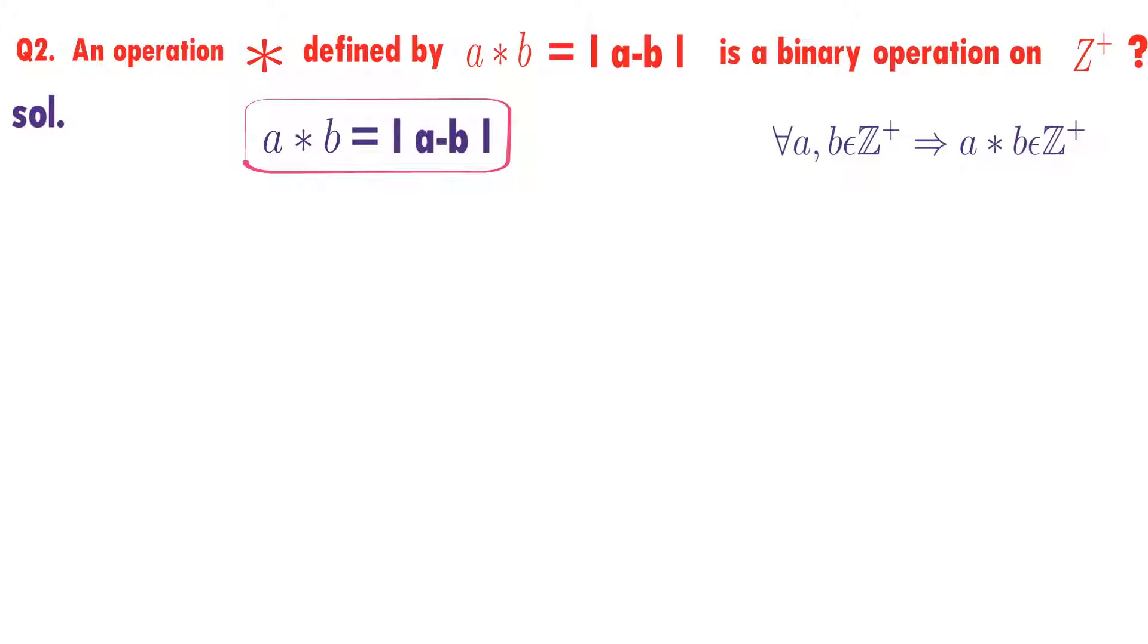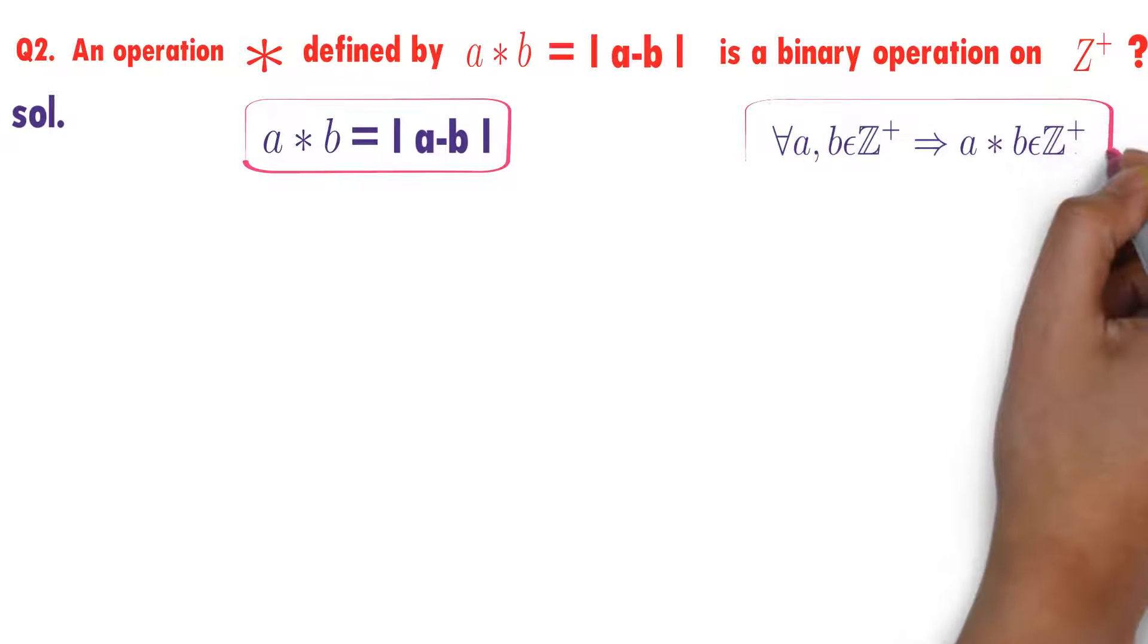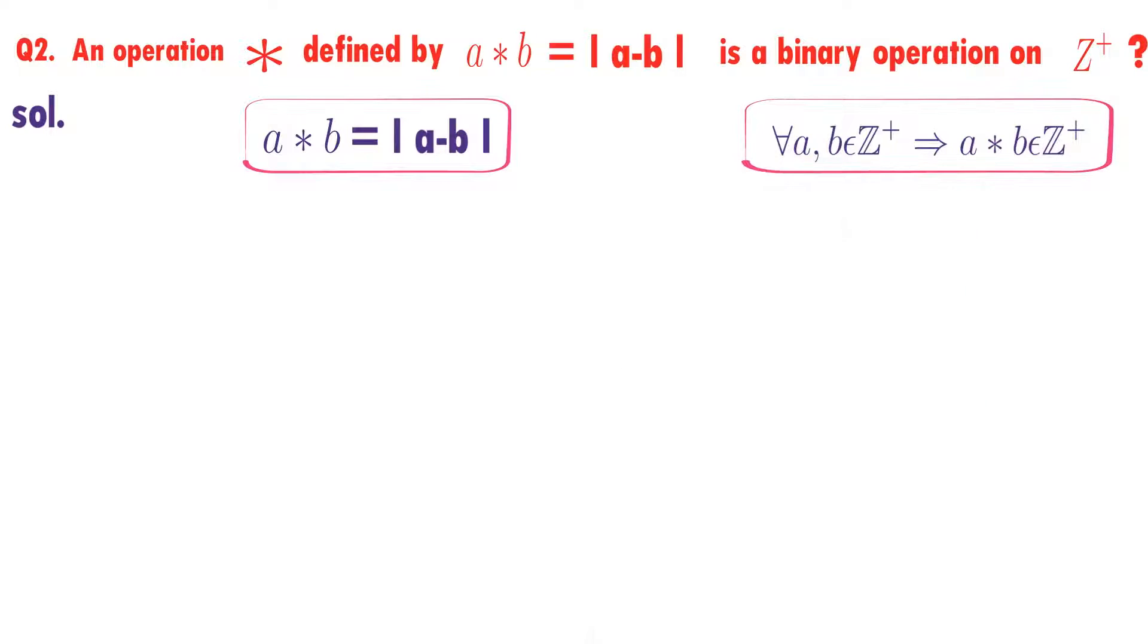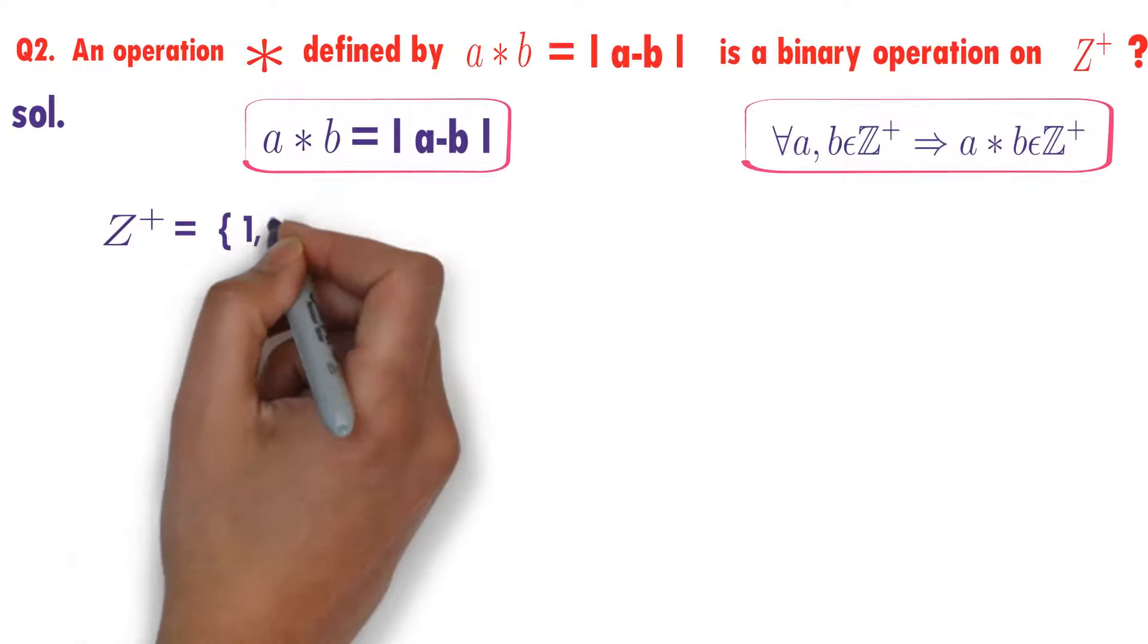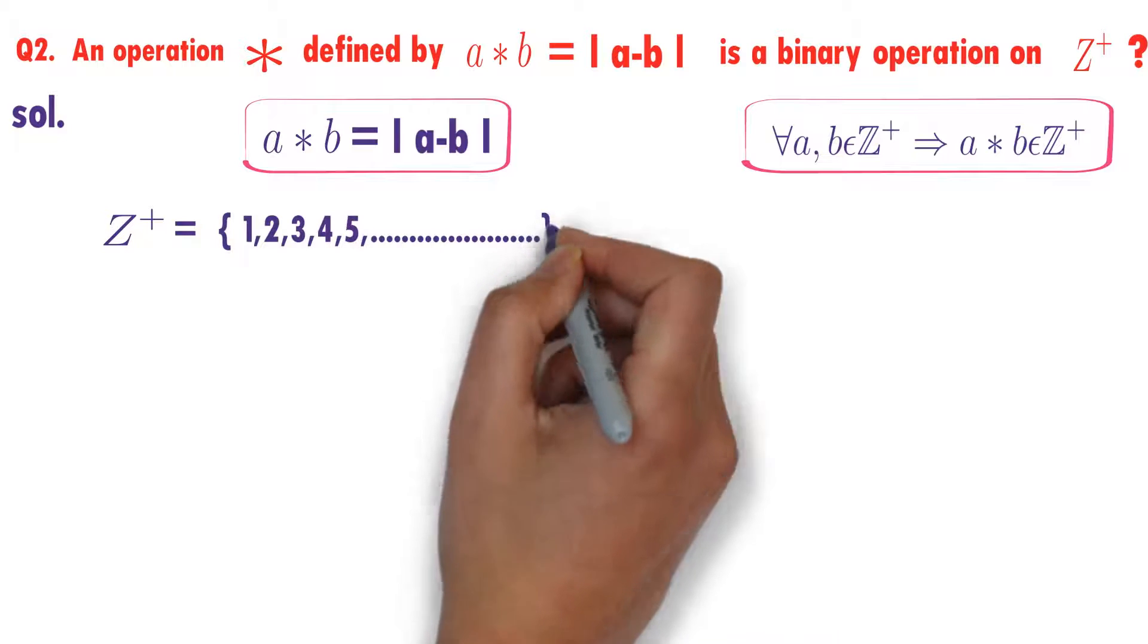We know that for every a, b belongs to Z plus, a star b belongs to Z plus, then star is called a binary operation on Z plus - we discussed this in the last class. What is Z plus? The set of all positive integers.